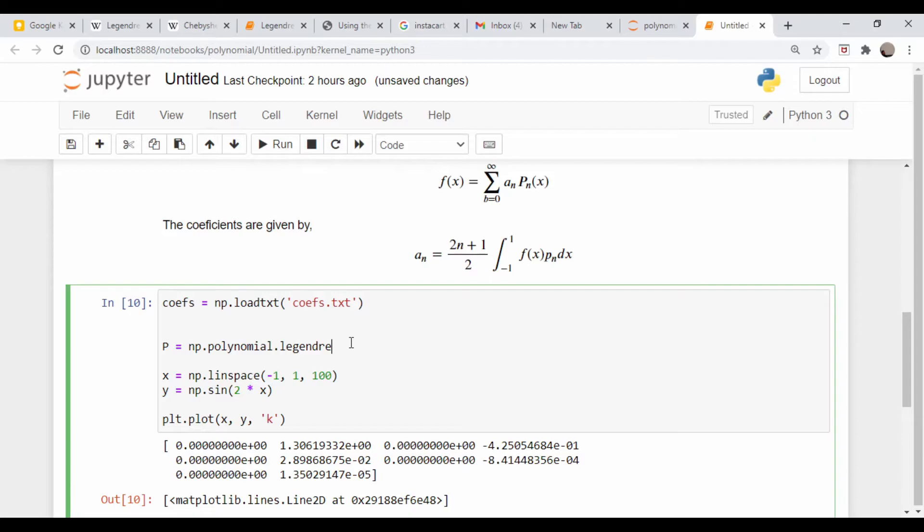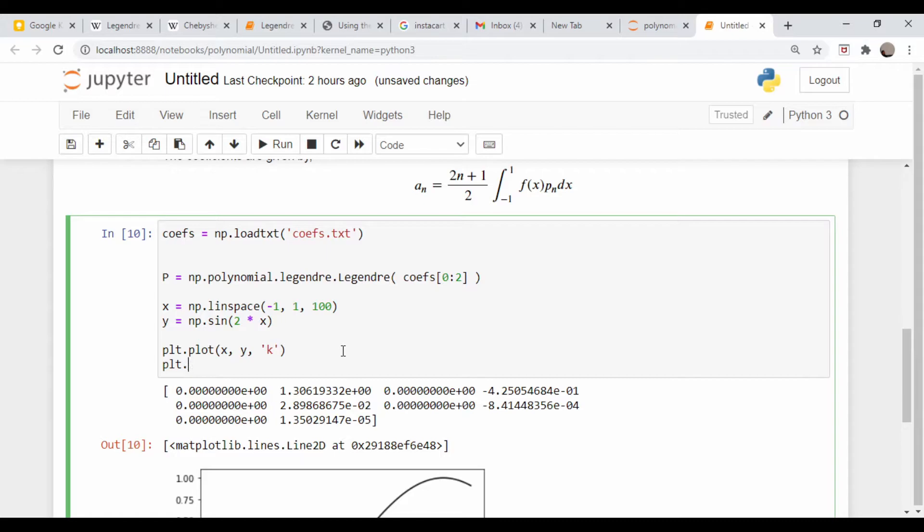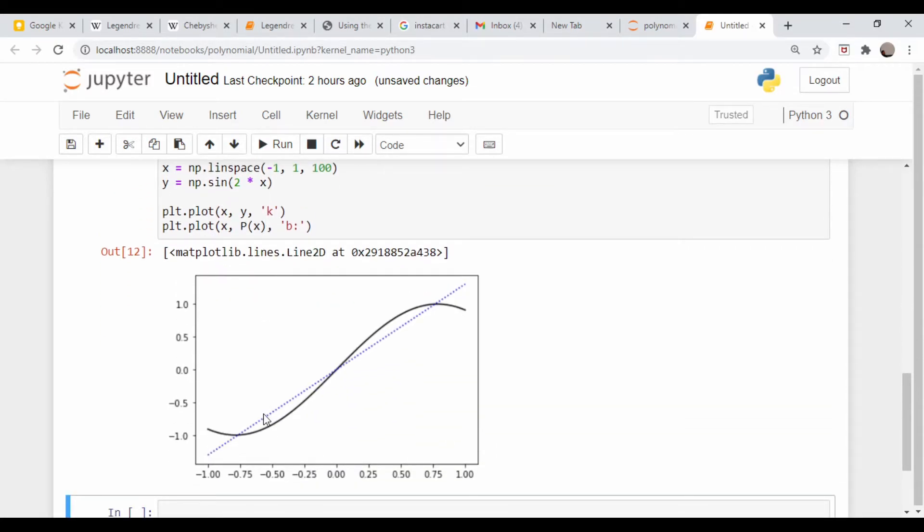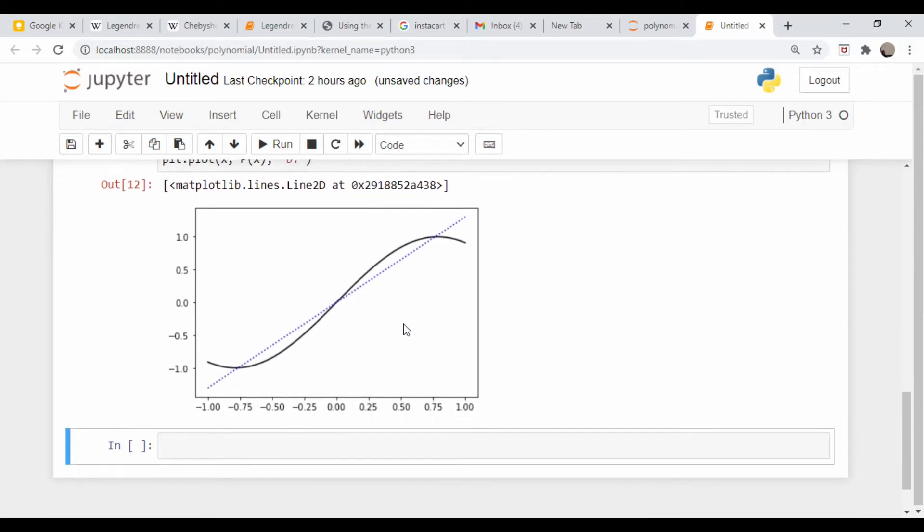And then we come down here and do plt.plot x comma p of x, and we'll make this a blue dotted line. What did I do here? I screwed this up. P of x, a blue dotted line, and I need a closing parenthesis. That should be a capital P, and that should also be a capital P.